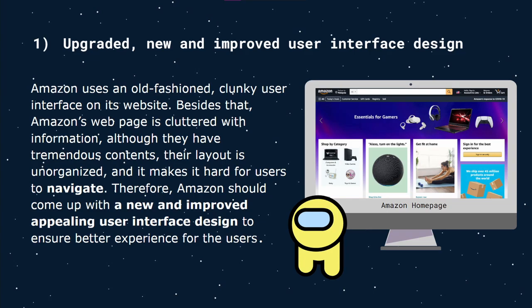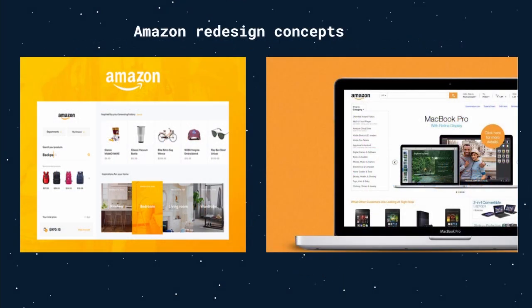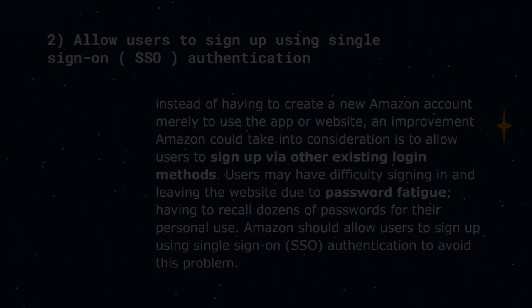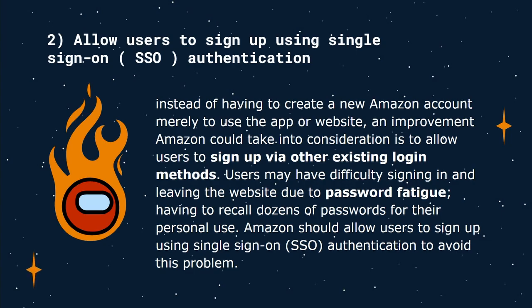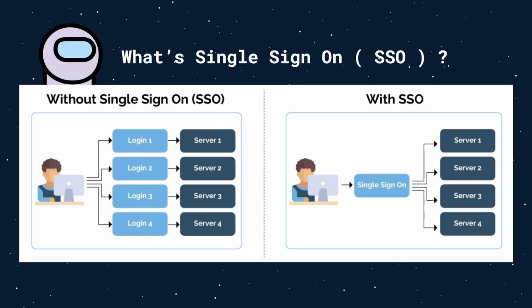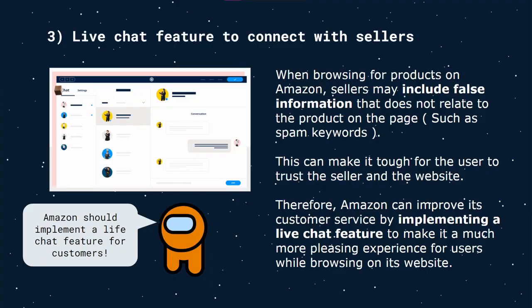Buyers would find a redesigned interface more appealing. Secondly, instead of requiring users to create a new account just to use the app or website, Amazon could allow sign-up using other existing login methods. Users often experience password fatigue, having to recall dozens of passwords. Amazon should allow users to sign up using Single Sign-On (SSO) authentication — with SSO, you only need one account instead of multiple.